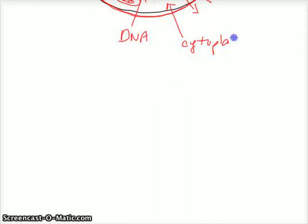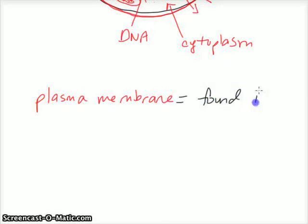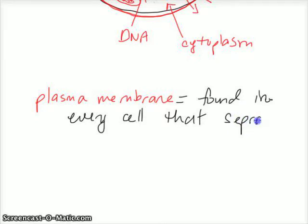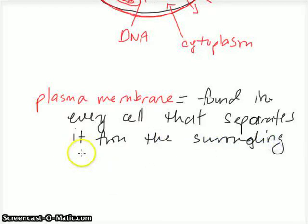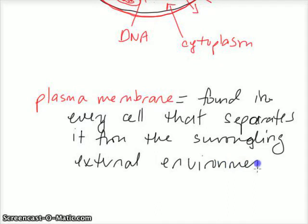The cytoplasm. Okay, so let's define the plasma membrane. The plasma membrane is found in every cell that separates it from the surrounding external internal environment.